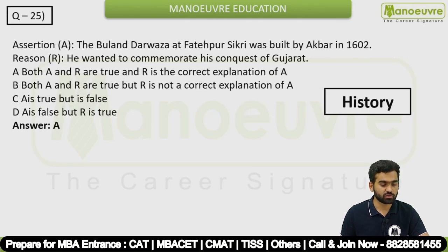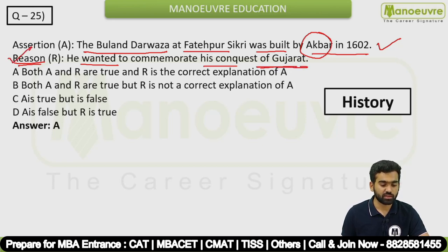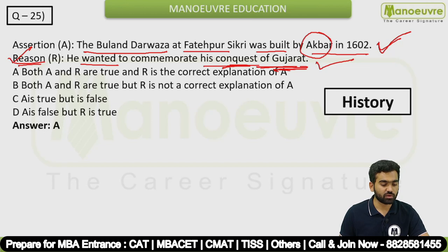The last question is history-related. Assertion: The Buland Darwaza at Fatehpur Sikri was built by Akbar in 1602 — this assertion is correct. Reason: He wanted to commemorate his conquest of Gujarat — this reason is also correct and is the correct explanation. So option A — Both A and R are true, and R is the correct explanation of A — is the right answer.